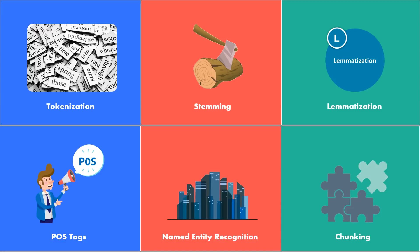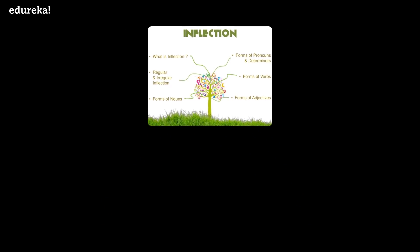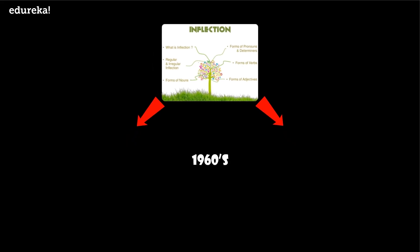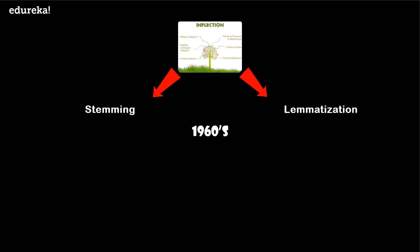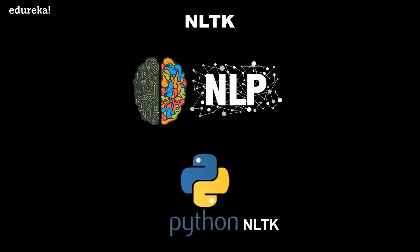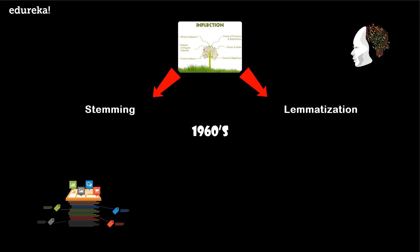Today our focus will be on stemming and lemmatization. The degree of inflection may be higher or lower in a language. An inflected word will have a common root form. Stemming and lemmatization have been studied and algorithms have been developed in computer science since the 1960s. You will learn about stemming and lemmatization in a practical approach covering the background, famous algorithms, applications, and how to stem and lemmatize words, sentences, and documents using the Python NLTK package — the natural language toolkit provided by Python for NLP tasks.